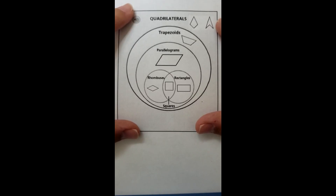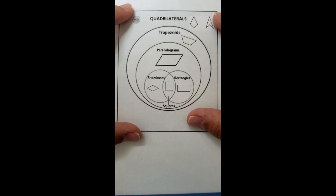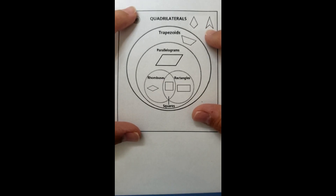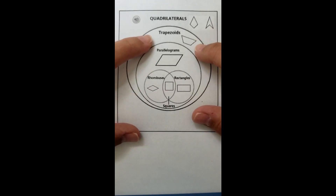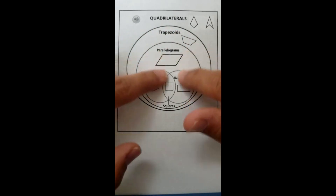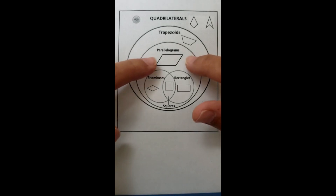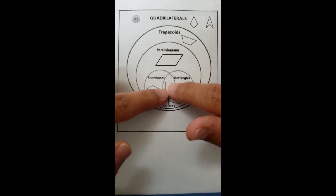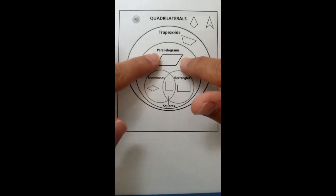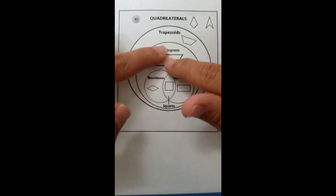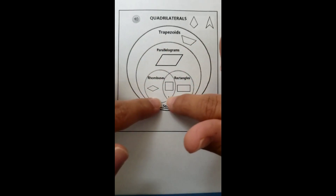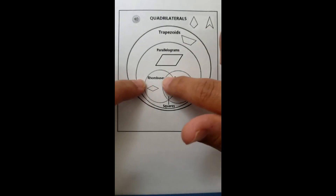Basically, anything inside this box is considered a quadrilateral — it has four sides and four angles. When we get into the trapezoid bubble, everything inside including the middle shapes are considered trapezoids. When we get into the parallelogram bubble, everything inside is considered a parallelogram. So the rhombus is part of the parallelogram bubble, the trapezoid bubble, and quadrilaterals overall.